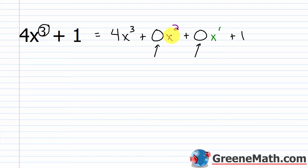The basic idea is: when performing long division with polynomials with missing terms, we need to use 0 as the coefficient for each missing term. And if something's written in standard form, it's very easy to see what's missing. If I have 4x cubed plus 1, I know I'm missing an x squared and an x to the first power.